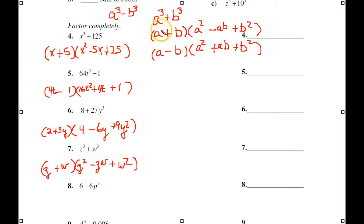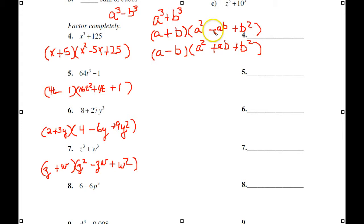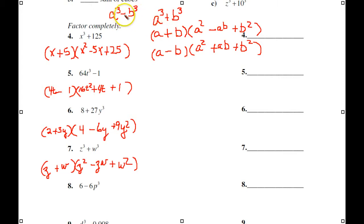So the rule is: find out if it's the difference or sum of perfect cubes, set up a parenthesis for 2 and a parenthesis for 3, put whatever sign is there in the binomial, put the opposite sign in the middle of your three-term trinomial, then take the cube root and cube root, square the first, multiply these together, square the last. It's exactly the same for the difference of perfect cubes.